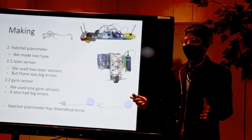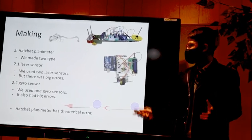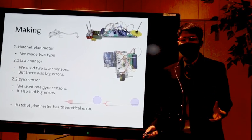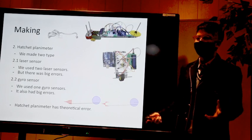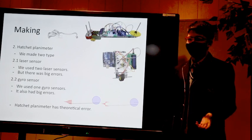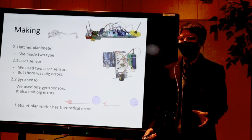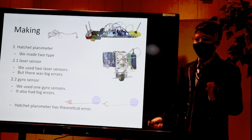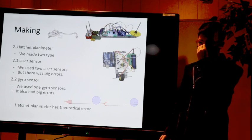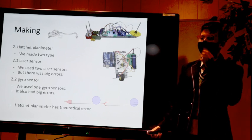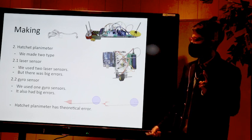Second one is hatchet planimeter. The name is hatchet planimeter because the original version is made by hatchet. So we decided to make it by a wheel because hatchet is a little bit dangerous. As you can see here, there are two types.